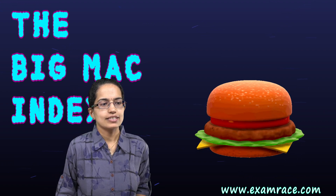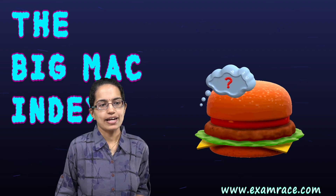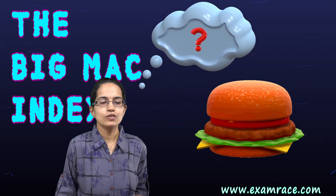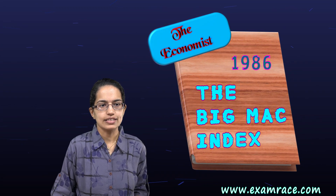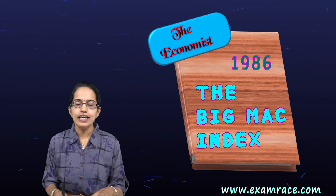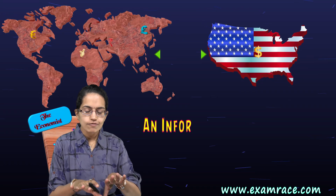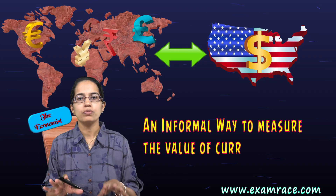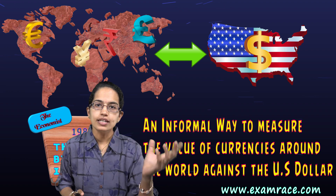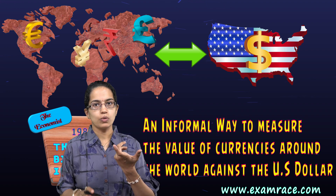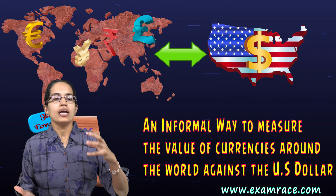Let's understand a very simple example of a burger. This can be understood with the Big Mac Index. This index was given by the Economist back in 1986. The idea was to understand an informal way to measure the currencies of countries across the globe with the currencies of America.